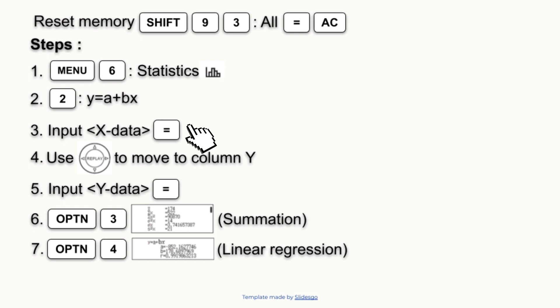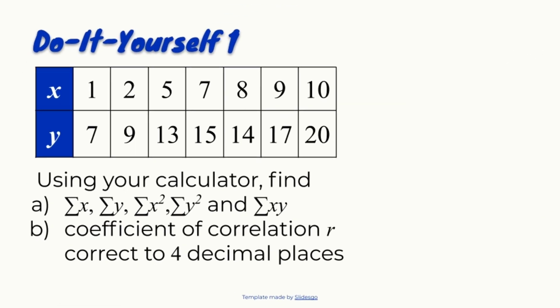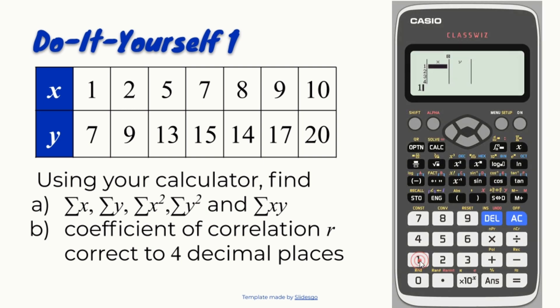The third step is to input our X data. Let's do it yourself 1 together. The first data for X is 1, so press 1, then equals. Second data is 2, then equals, and repeat the same step for the rest of X data.